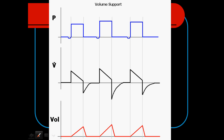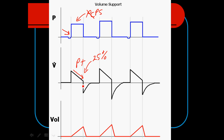Volume support looks very much like pressure support — when we graph it out, there are no visible differences in the waveform. It is patient triggered, with a pressure support level reached during inspiration. The inspiratory flow is controlled by the patient; once that flow declines to a certain point — in some ventilators we can choose that level, often 25% of peak inspiratory flow — the ventilator cycles into exhalation. That's what we call flow cycling.